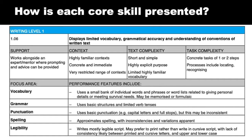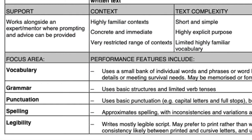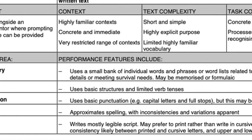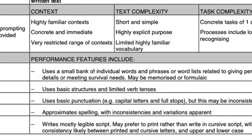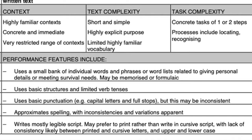That second indicator has been broken into five focus areas: vocabulary, grammar, punctuation, spelling and legibility. This is the same layout for every level of writing in the ACSF. Beside each focus area is a performance feature describing the level of specificity for performance. For example, punctuation: uses basic punctuation such as capital letters and full stops, but this may be inconsistent.